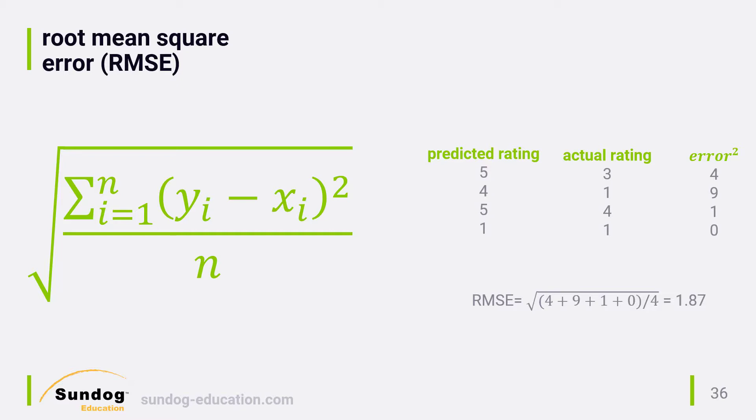That's higher than the MAE score for this same data of 1.5, because it's penalizing us hard for predicting a rating of 4 on an item that the user hated with a rating of 1. Again, remember high RMSEs are bad. You want low error scores, not high ones.